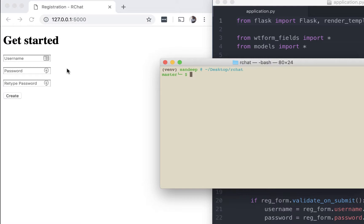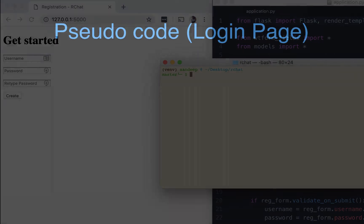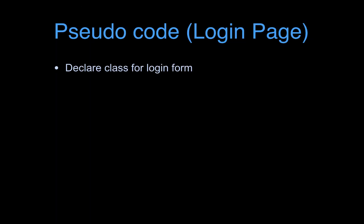Since this has a lot of moving parts, let's have a look at the pseudocode. Since we are working with Flask WTForms we need to declare a login form class — that's the first thing we will do. We have already done this for the registration form so it should be a straightforward process at this stage.